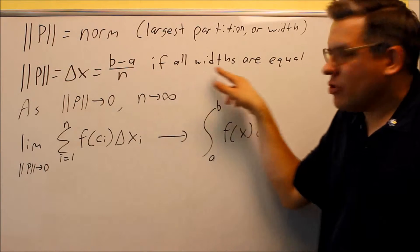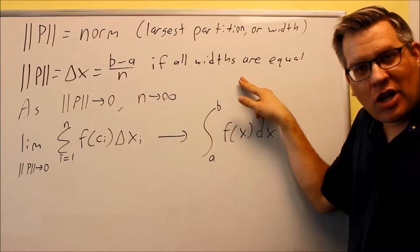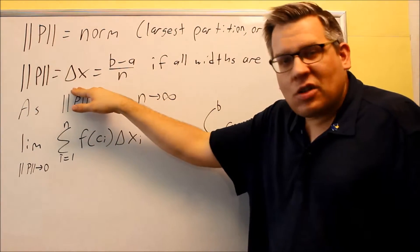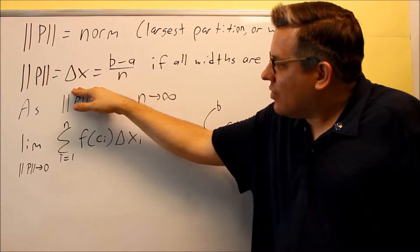Now of course, if you're going to take them all as uniform widths, all the widths are exactly the same, then there's not one that's going to be the largest, and of course your norm is just going to be the same thing as your delta x.